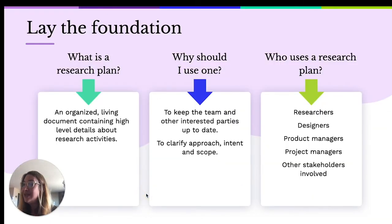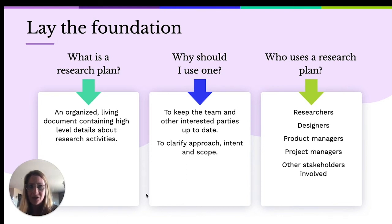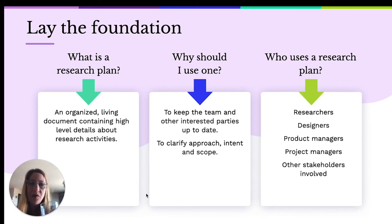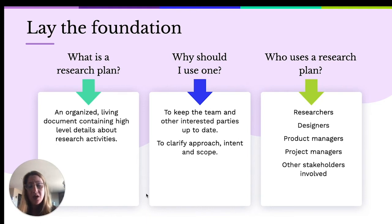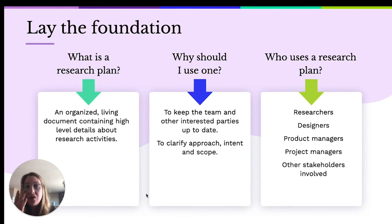Our plan is going to change as we make progress and the more we learn. It's going to get updated dozens of times — it is and should be a living, breathing document. A research plan is an organized living document containing high-level details. What those details include may fluctuate depending upon who's authoring the plan, what type of plan it is, the culture in which it will be executed, and the level of UX maturity in the organization. All key stakeholders on the team should be using the plan, contributing to it, and knowing when there have been major updates.